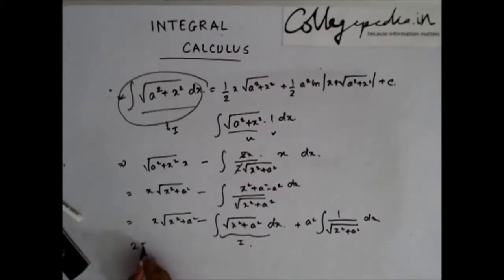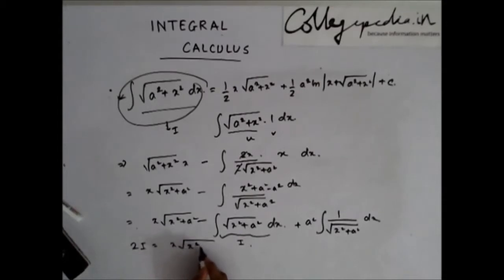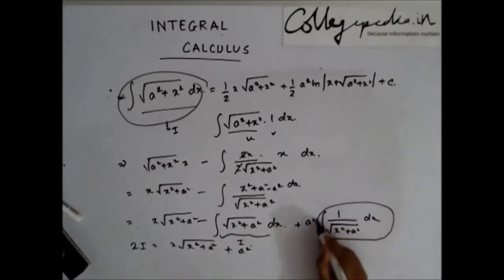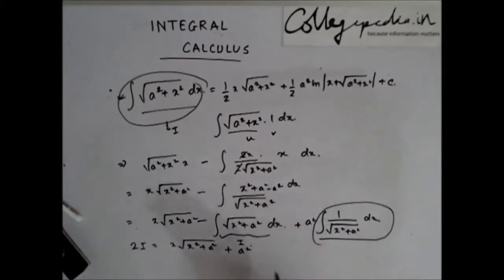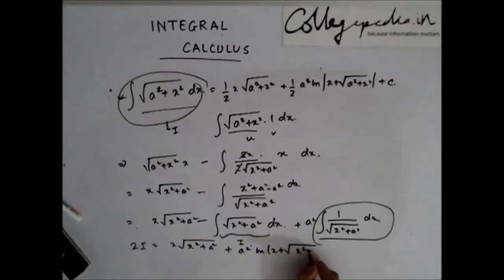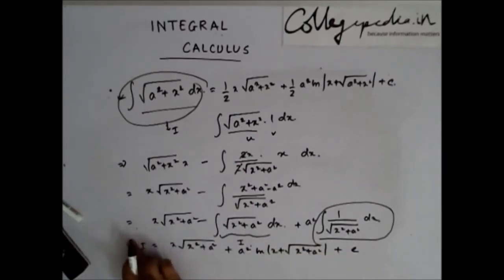So 2i becomes x·√(x²+a²) plus a² times the standard integral, which is ln(x + √(a²+x²)), plus some constant c. My i is then this expression divided by 2.